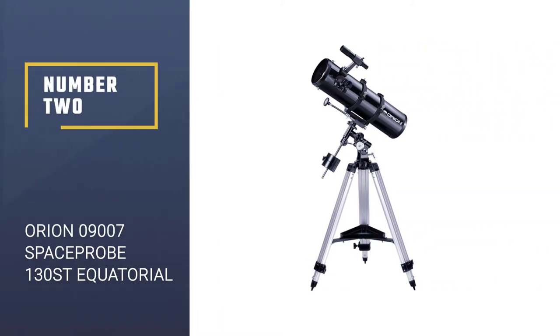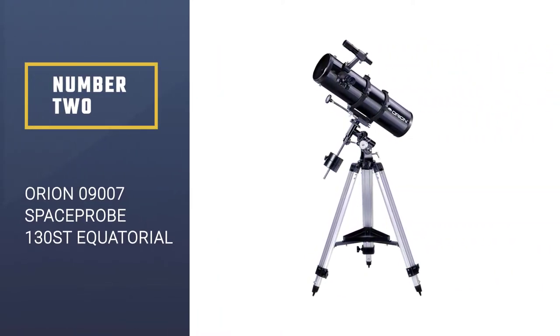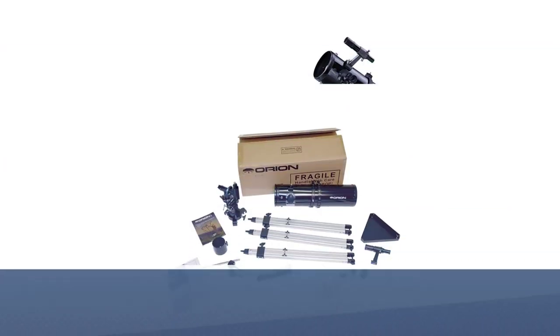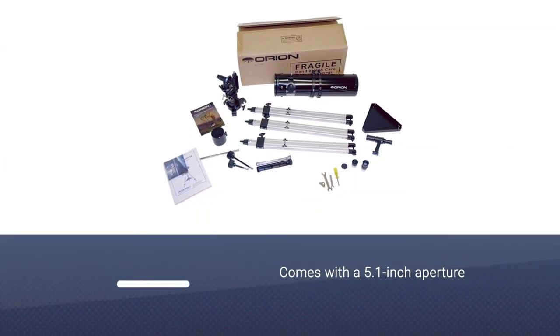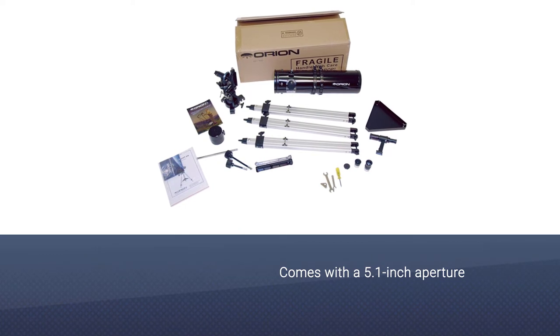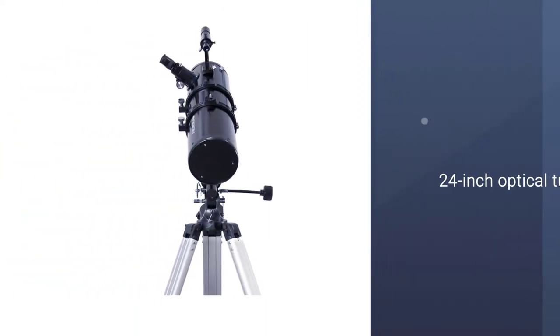Number two: Orion 09007 Space Probe 130 ST Equatorial. This is the best telescope for viewing planets and galaxies, with a 5.1-inch aperture reflector that gathers enough light to view planets and brighter galaxies.